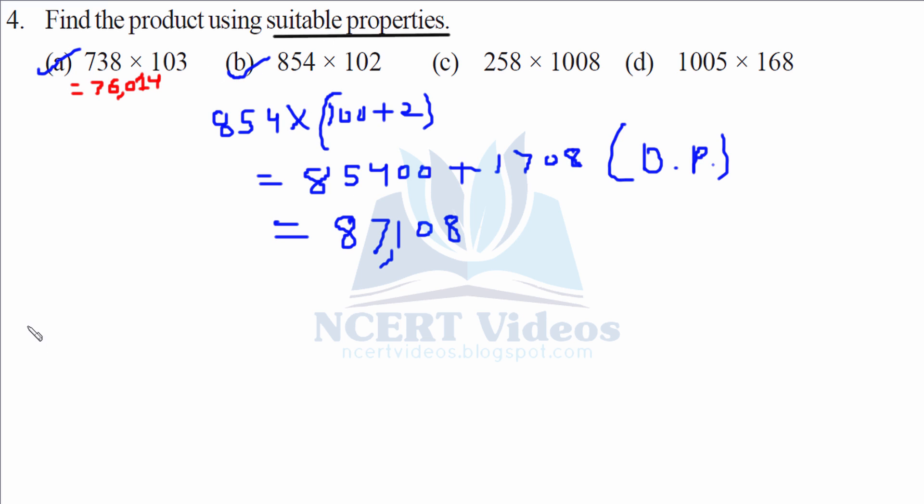Now part c. 258 is complex. So we will write it as it is. But we have an opportunity here with 1008. 1000 plus 8. So we will grab such an opportunity and make the problem solved. 258 multiplied with 1000. Now we will multiply the other part. And we are using distributive property in these questions. So when we add to the final answer, it comes to 260064.